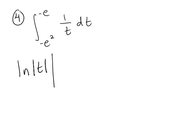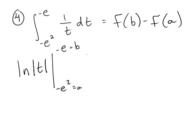And we want to evaluate that from negative e squared to negative e. So remember, this is your a and this is your b. The fundamental theorem tells you you're going to do F of b minus F of a, where F is your antiderivative.